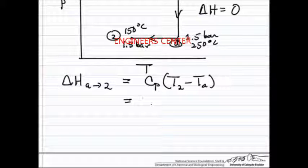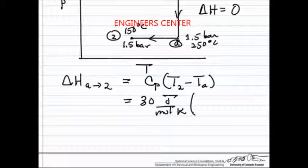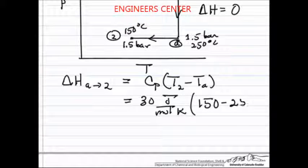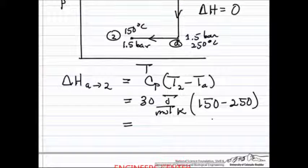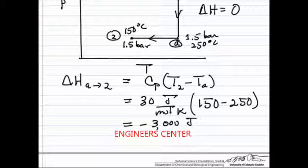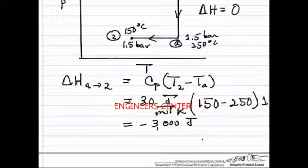So heat capacity for that step, 30 joules per mole per Kelvin. And since we're looking at temperature difference, we can use centigrade. And so this change then in ΔH is minus 3,000 joules, and I should indicate we're doing this for 1 mole, minus 3,000 joules.